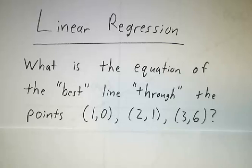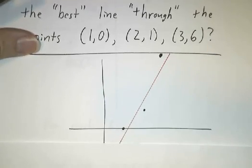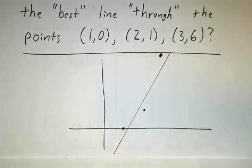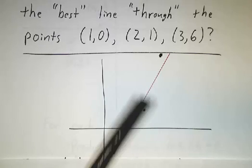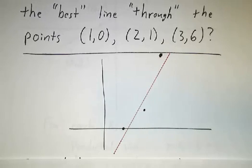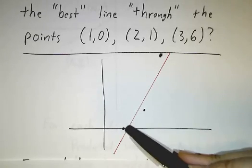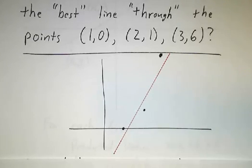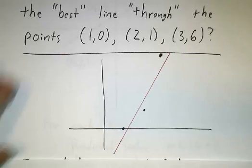And I put best and through in quotes because, of course, there is no line through those three points. They don't lie in a straight line. And so when I say through, I mean roughly through. Any line that you draw is going to be off. It's going to miss one, two, or three of the points by different amounts. And we want to come up with some sort of measurement of how good a line is and then pick the best one.